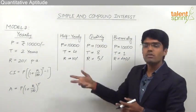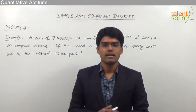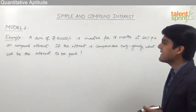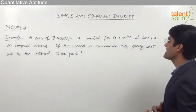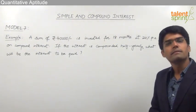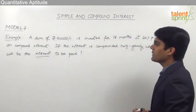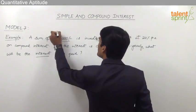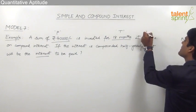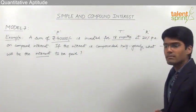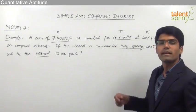Now let us take an example based on the various types of compounding we have just understood. The question is: a sum of Rs. 40,000 is invested for 18 months at 20% per annum on compound interest. If the interest is compounded half yearly, what will be the interest to be paid? So the principal is Rs. 40,000, time is 18 months, rate of interest is 20% per annum, and compounding is half yearly.